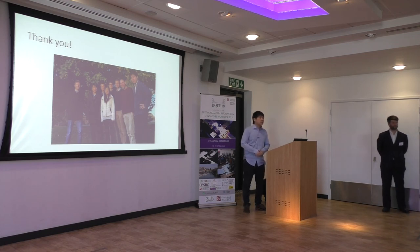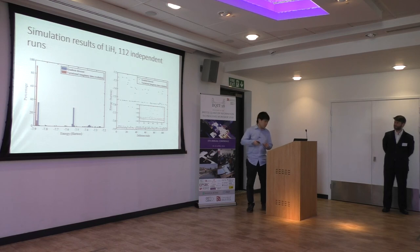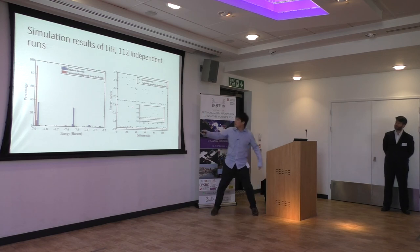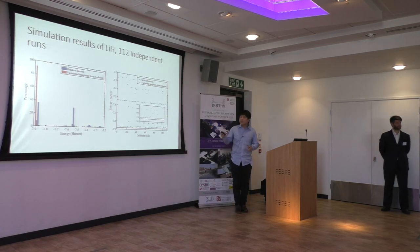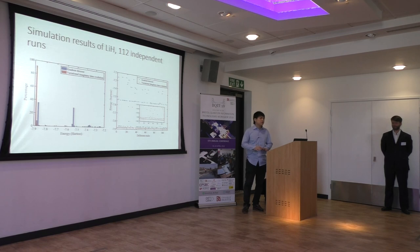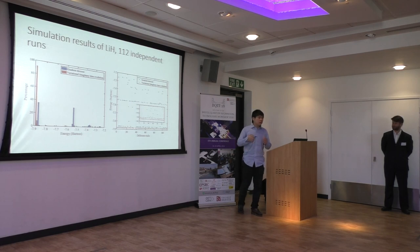Question: Is it always the case that your algorithm will find the global minimum? Answer: Our algorithm found the ground state with about 90% probability, but still fails in some cases — you can see some red dots at local minima. This is because we use a restricted ansatz. If you could realize the original imaginary time evolution exactly, you would always find the ground state provided the initial state has finite overlap with it. The limitation comes from restricting to a variational ansatz, so choosing a good ansatz that can encode the imaginary time evolution path is key.